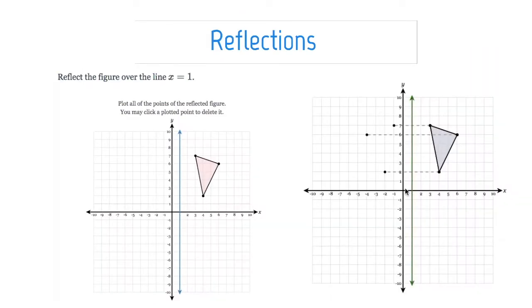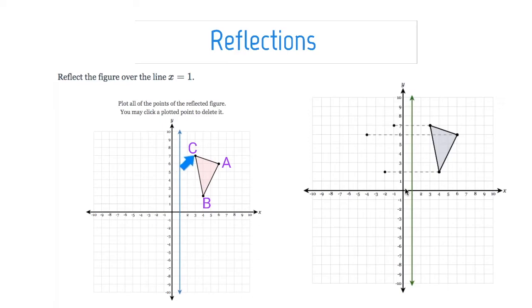Reflections are known as opposite isometries. I'm going to label these points to make it easier for us. I've labeled my points, and then what I'm going to do is reflect this over the line x equals one. Remember, vertical lines have an undefined slope and are always x equals something. So this is x equals one — basically all of the x coordinates along this line are one. If I want to reflect it over that line, all I have to do is count the number of boxes to the line of reflection.